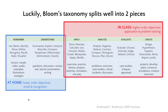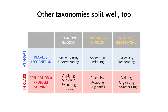For the at-home passive knowledge transfer component, we're going to use remembering and understanding. For the in-class activities, we're going to use these higher-order objectives: apply, analyze, evaluate, and create. So the low-order ones are for at home and the higher-order ones are for in-class. Other taxonomies for psychomotor and affective skills also have a nice split, with recall and recognition at home and application and problem-solving as in-class activities.